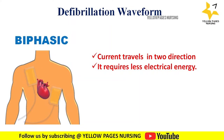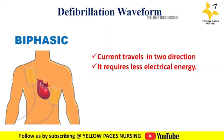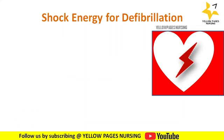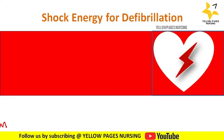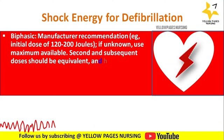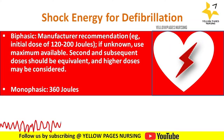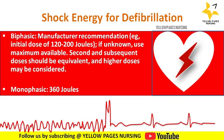With biphasic waveform, defibrillation success is achieved with lower energy and voltage. The device-dependent energy is 150–200 joules for first defibrillation and 200–360 joules for all subsequent shocks. For biphasic, the initial dose is 120–200 joules; if unknown, use maximum available, with second and subsequent doses equivalent or higher. With monophasic, it is always 360 joules.